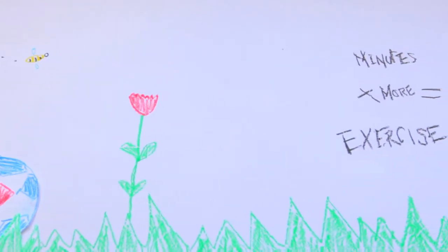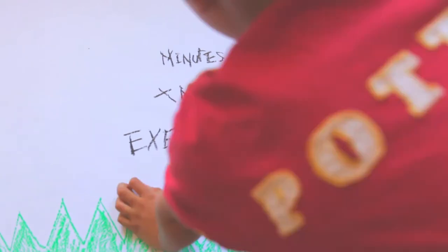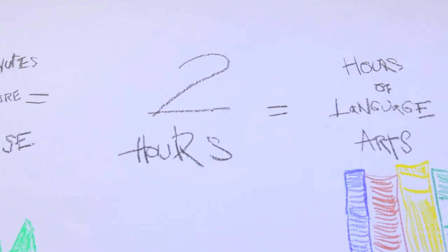After 24 weeks, those two hours turned into 300 minutes per week. Ten times more exercise than before.